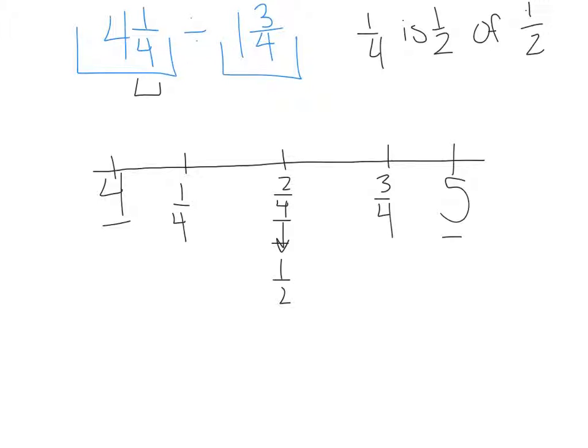So now what I'm going to do is I'm going to use a different color and I'm going to find out where 4 and 1 fourth is. If this is my 4 and 4 and 1 fourth is 1 fourth more, then this point on the number line is 4 and 1 fourth.